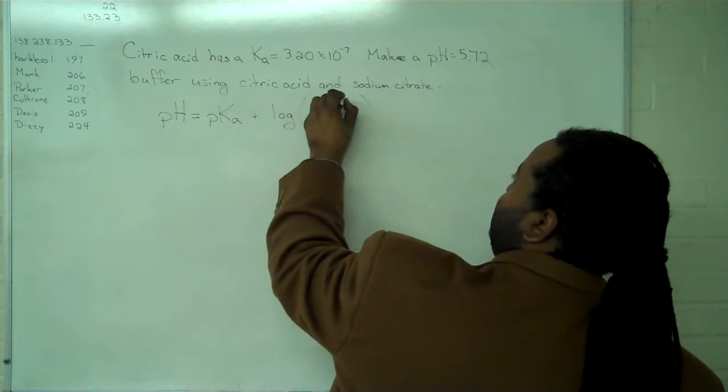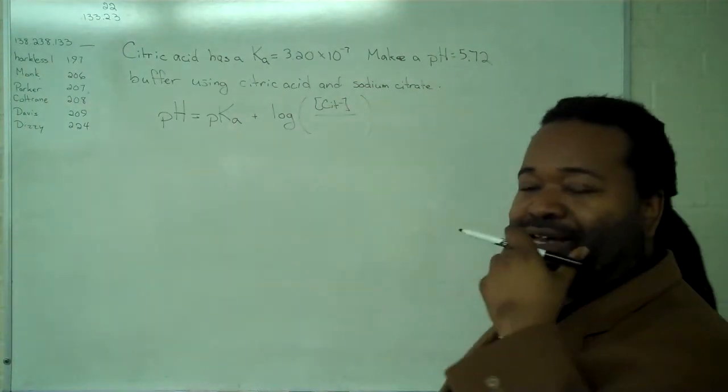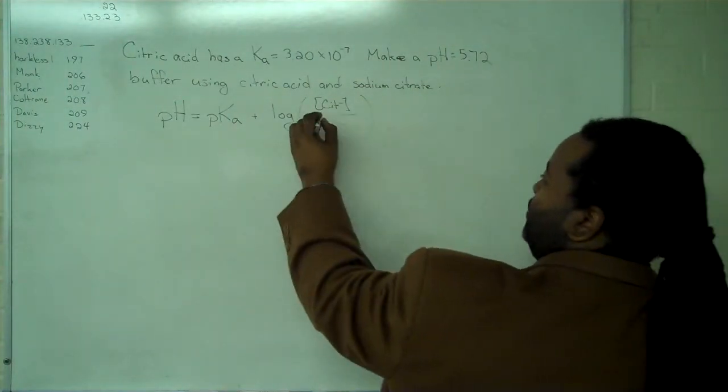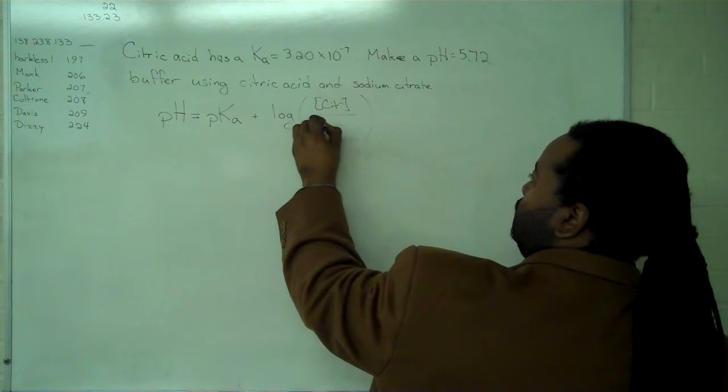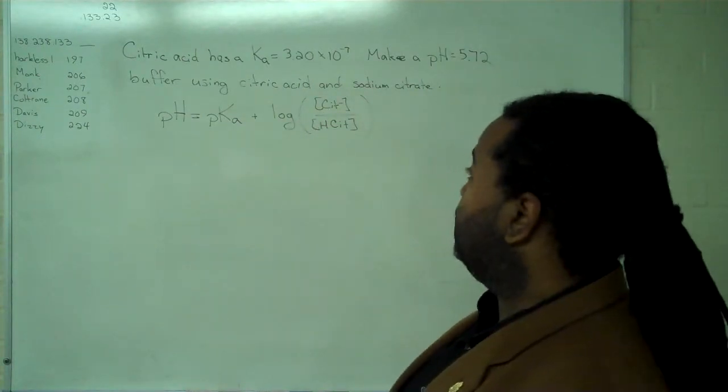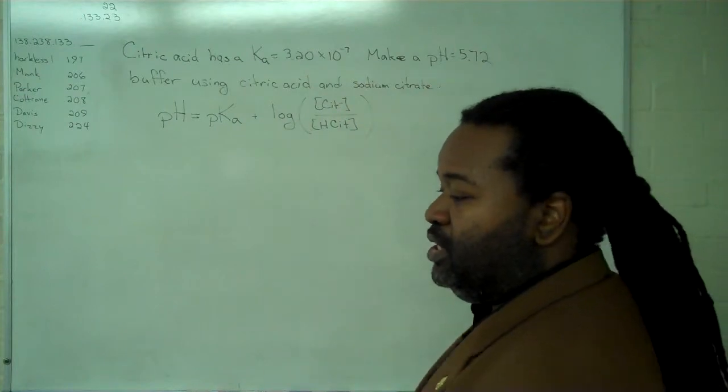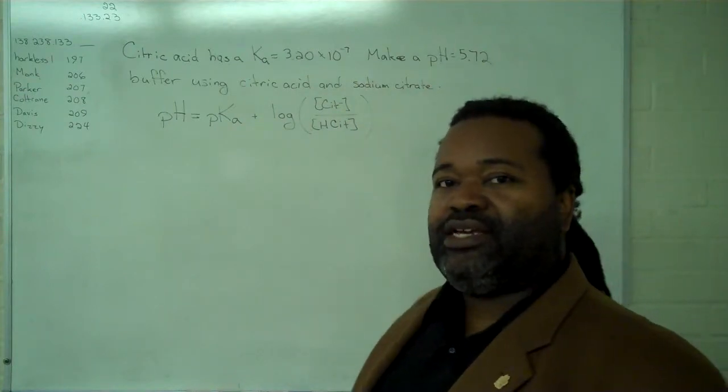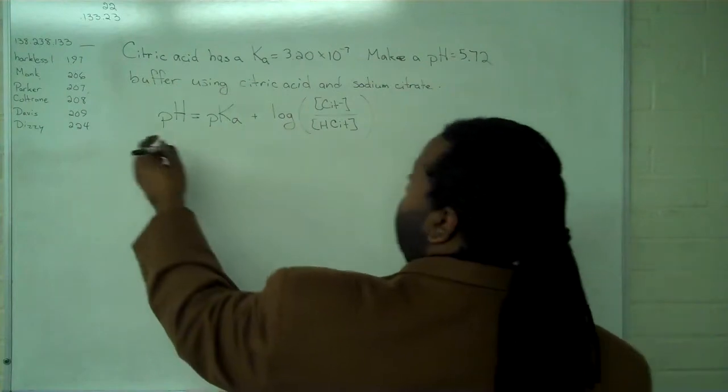We'll write CIT minus for the citrate ion. This is the conjugate base to the citric acid. We plug in the values of pH, and we use the fact that pKa is minus log of the Ka to find a value there.